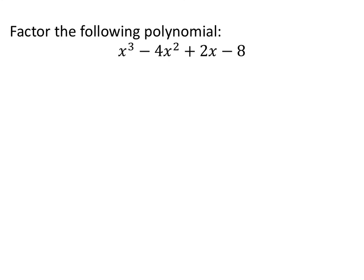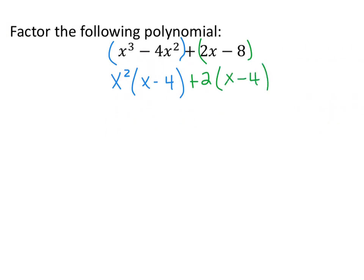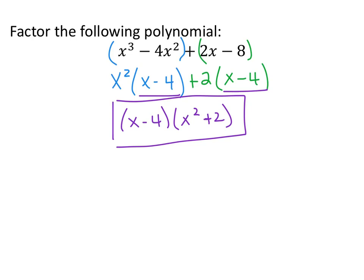This last one requires factor by grouping. There are no common terms and it's not a special product or quadratic trinomial, but it has four terms. Looking at the first two terms, x³ - 4x², we can factor out x², leaving x²(x - 4). From the last two terms, 2x - 8, we factor out 2, leaving 2(x - 4). Since both groups match with (x - 4), we factor that out, giving (x - 4)(x² + 2). This method factors the cubic function successfully, and that concludes this review of factoring.